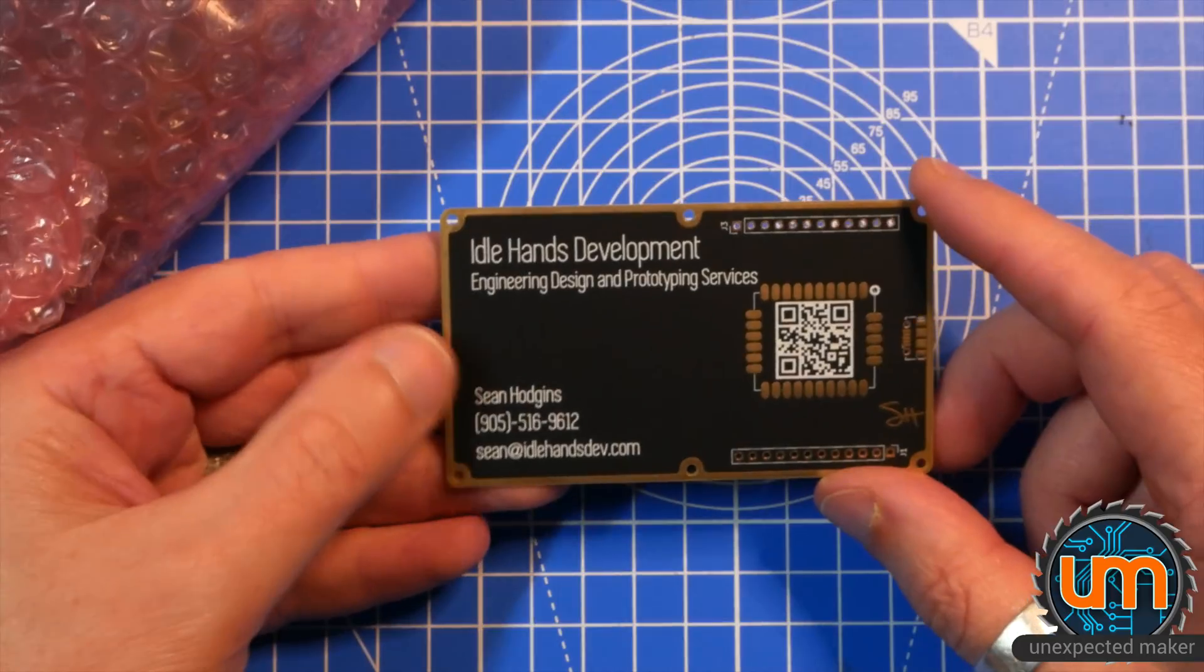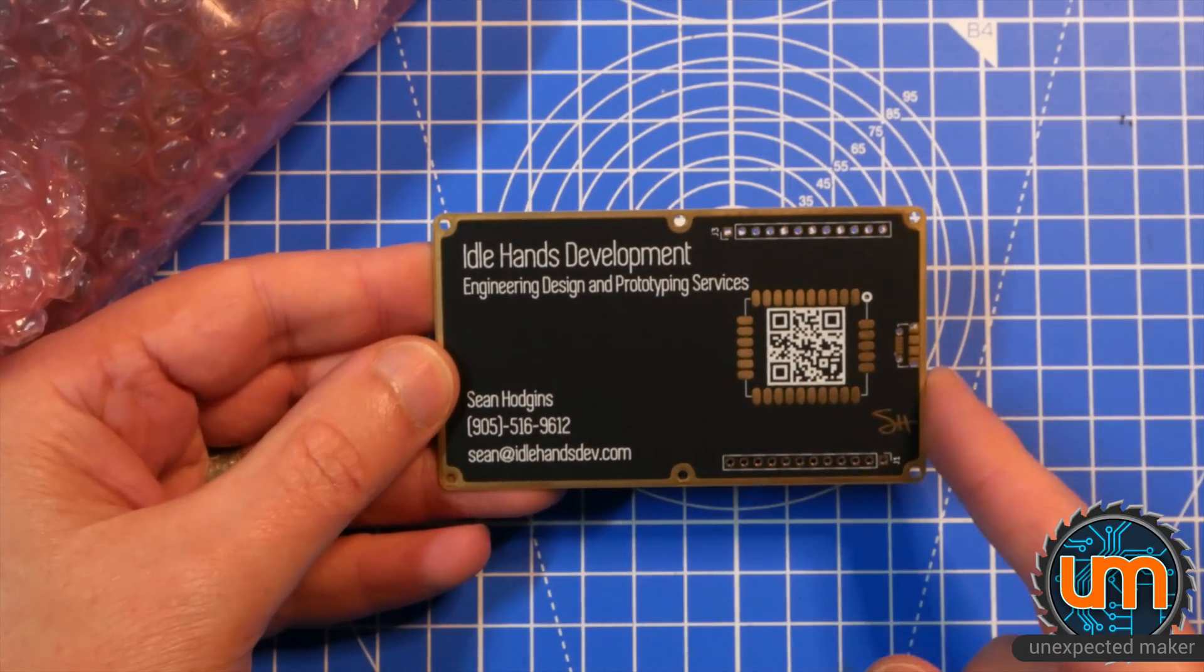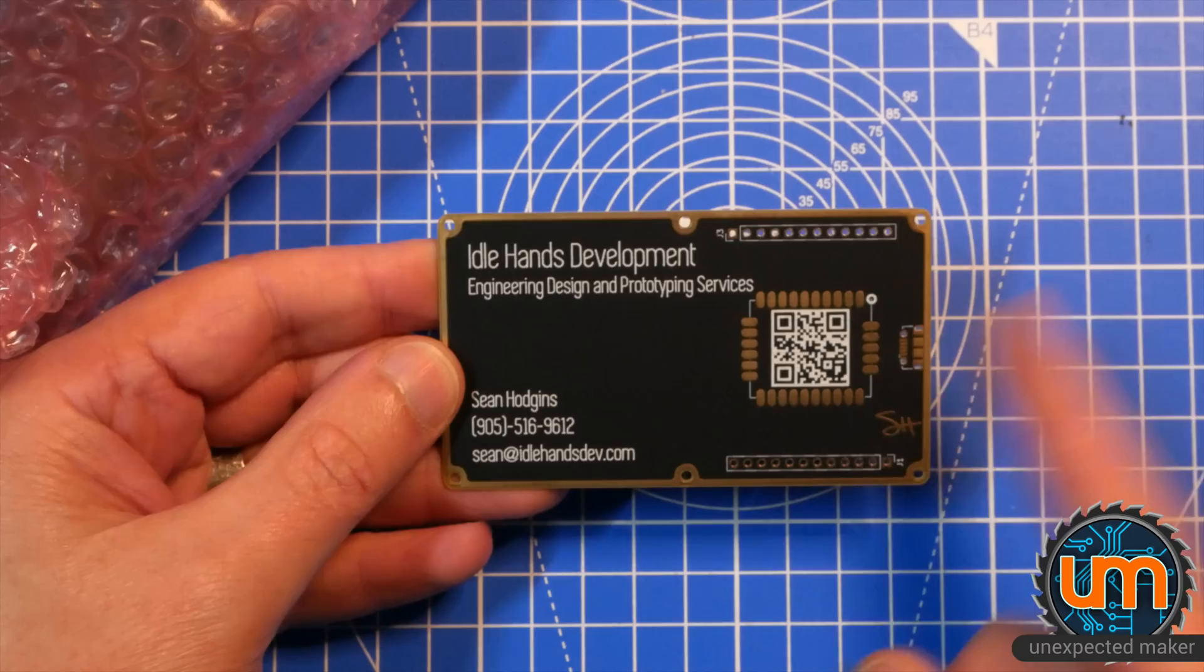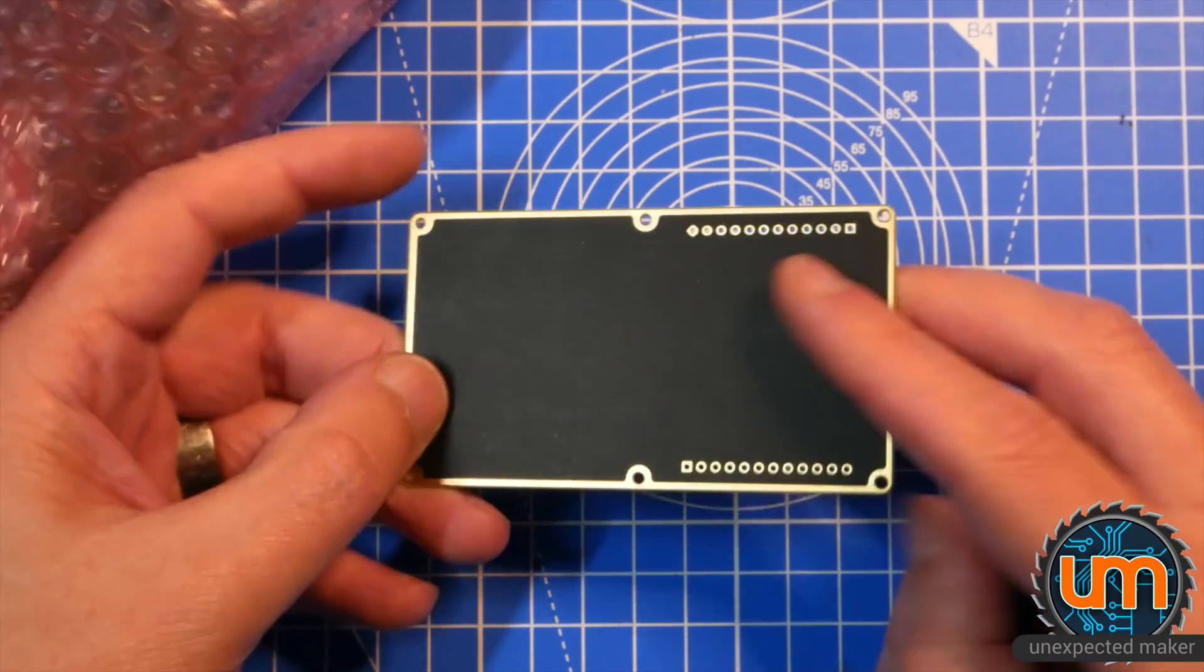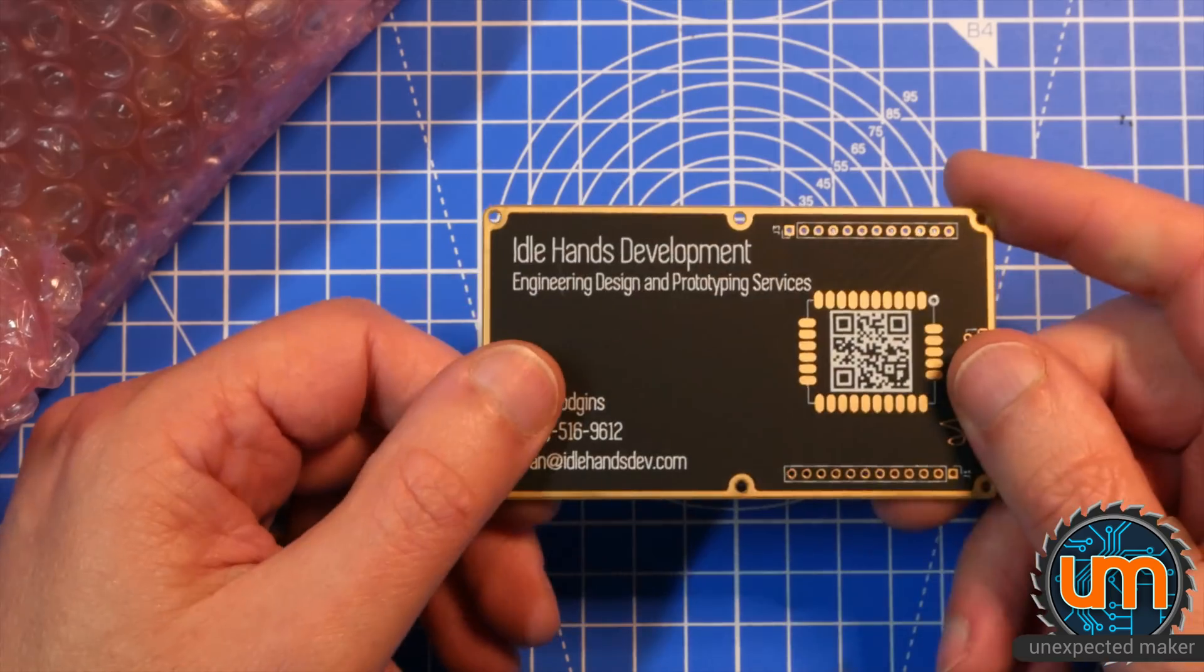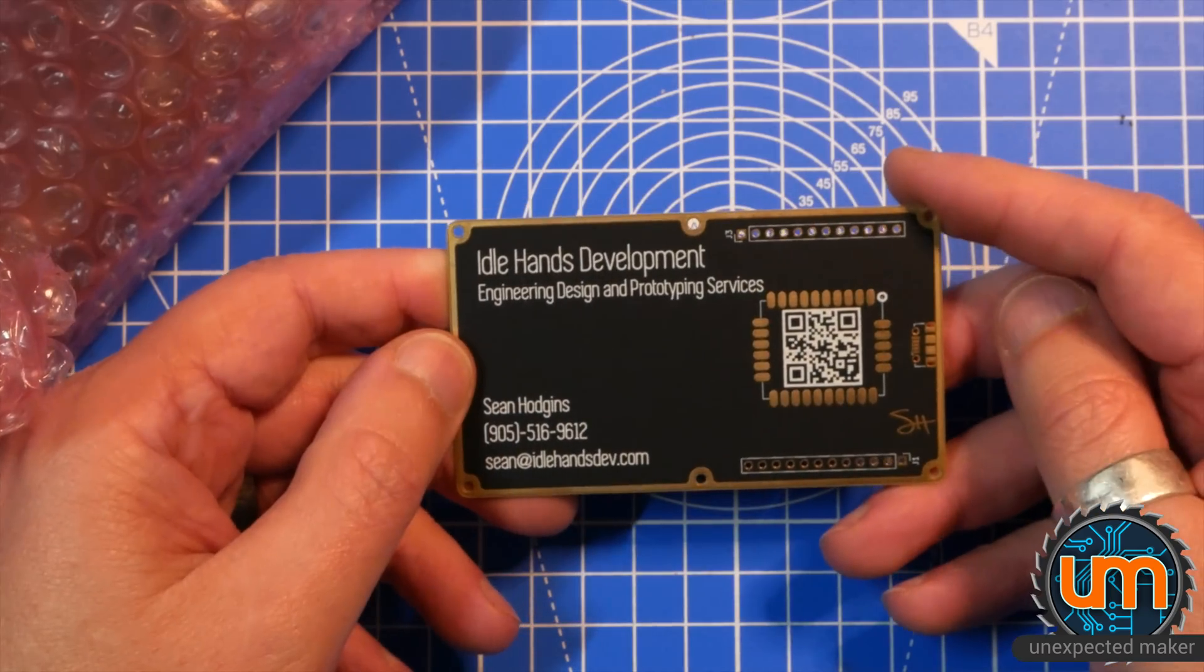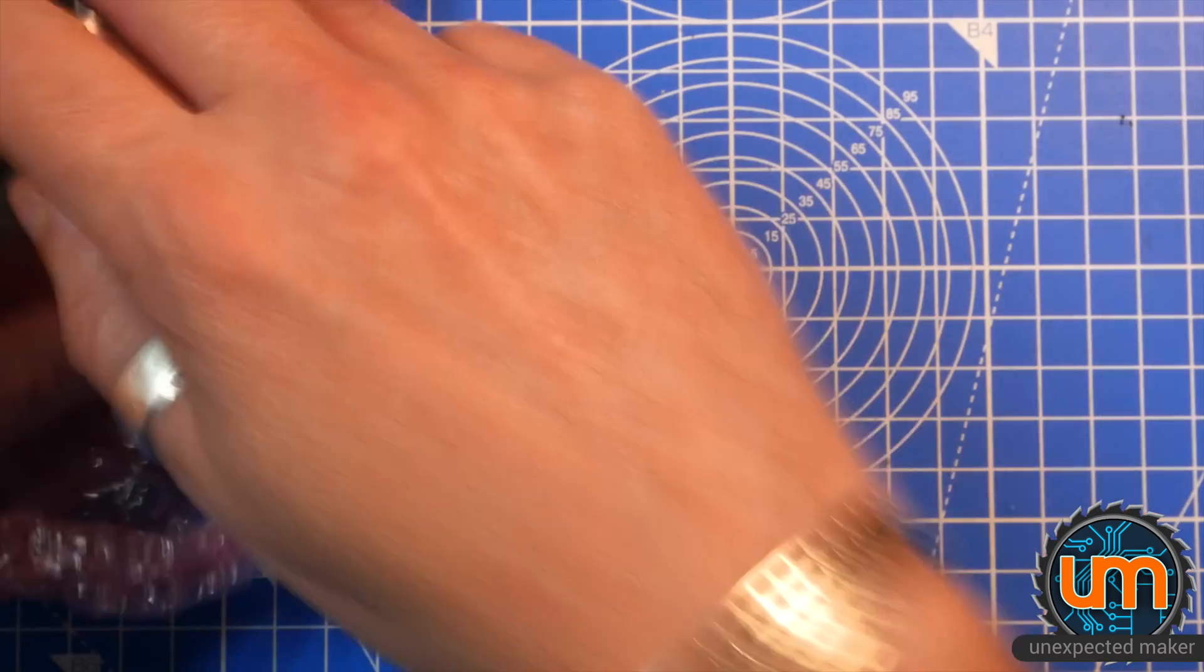So this is from Sean. This is his PCB card. But apparently, you can stick an IC on this and a USB and it does something. I don't know. But, wow, that's really nice. Matt Black. ENIG. See? Black is sexy. Okay.